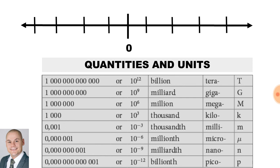Before we approach some calculations, just a reminder of the different quantities and units. Using this number line, with zero at the center, everything to the left will be positive and everything to the right will be negative.